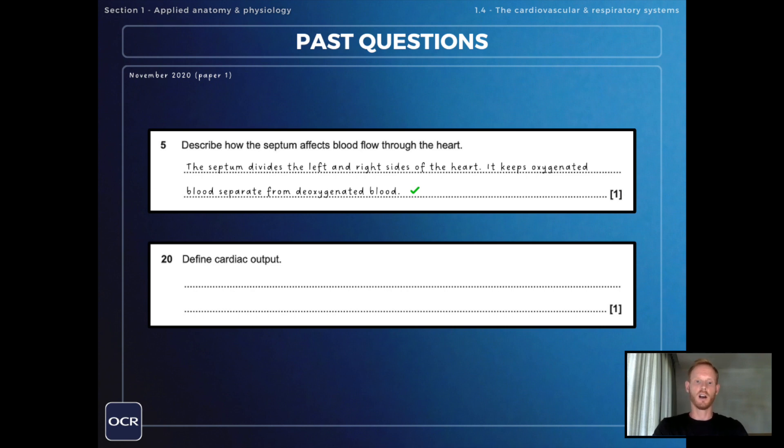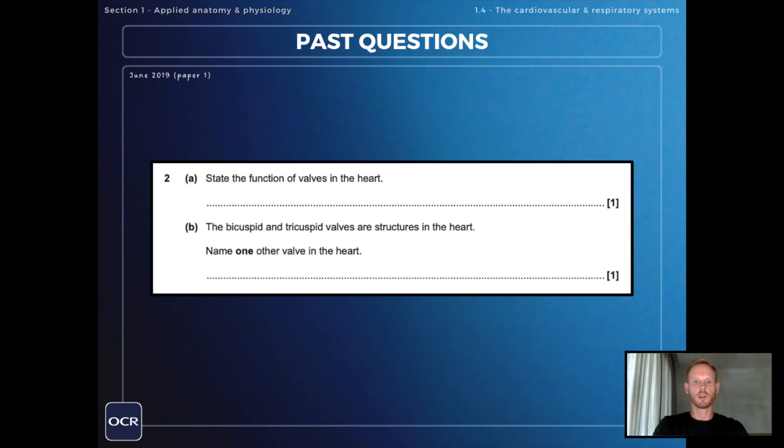The next one is to define cardiac output. Cardiac output is the volume of blood ejected from the left ventricle per minute, and I'll put in brackets liters per minute. It's always a good idea to include the units if you can. Next up, state the function of valves in the heart, and of course that's to prevent blood from flowing backwards.